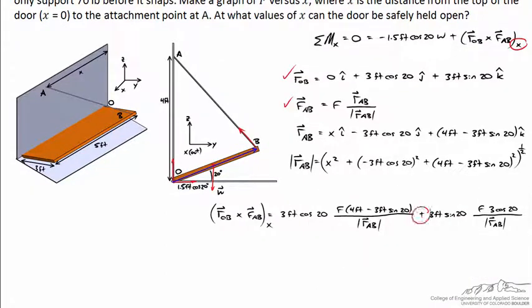So here's the x component of the cross product. And notice the negative sign cancels and we get a positive. We add the two terms.